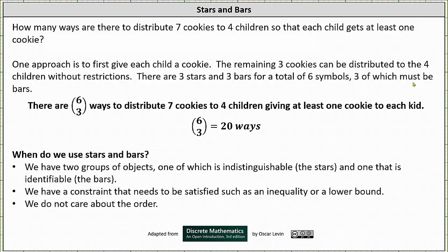Again three of which must be bars and therefore there are 6 choose 3 ways to distribute seven cookies to four children giving at least one cookie to each child. And 6 choose 3 is equal to 20.